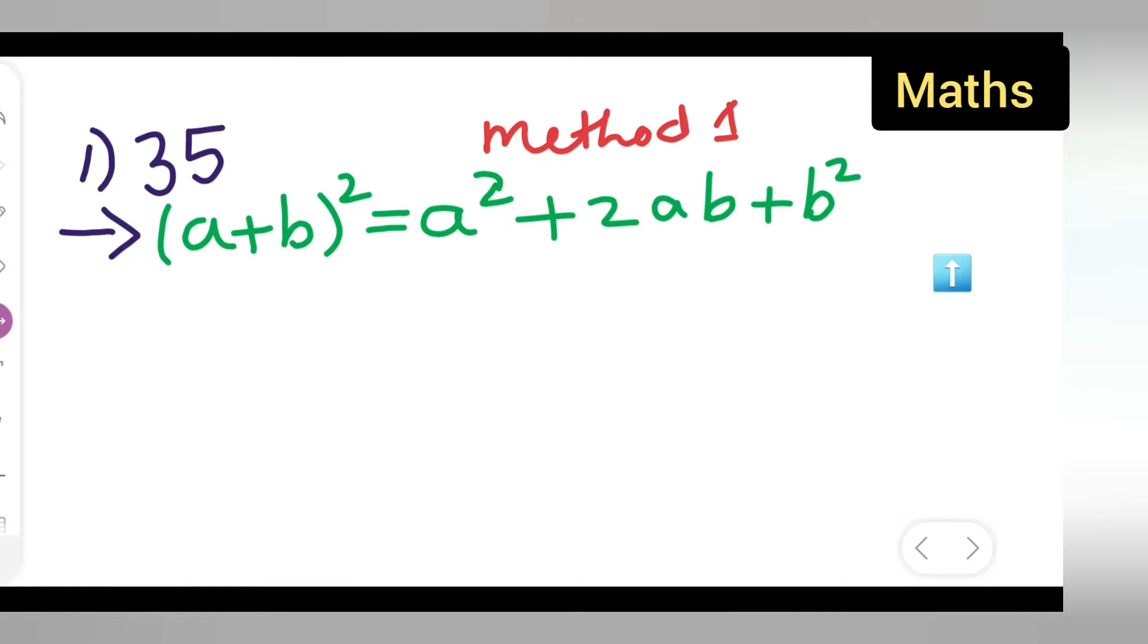What I am going to do is write 35². We have to find the square of 35, so write down 35² = (30+5)².